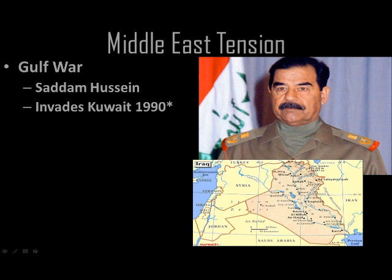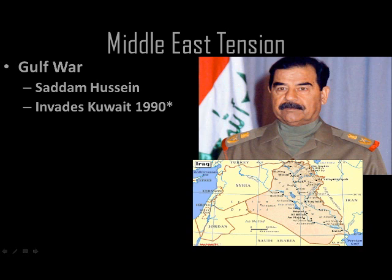He looks to the south, to his neighbor Kuwait. Iraq is a very large country, home of the Tigris and Euphrates Rivers — the Mesopotamia area you learn about freshman year. Kuwait is that very small territory at the southern tip on the Persian Gulf. Kuwait had a great deal of the world's oil reserves. So Saddam Hussein decides that if he invades Kuwait, he will take control of their oil. He claimed Kuwait had been stealing his oil, but it was very clear to the world that that was absolutely not the case.